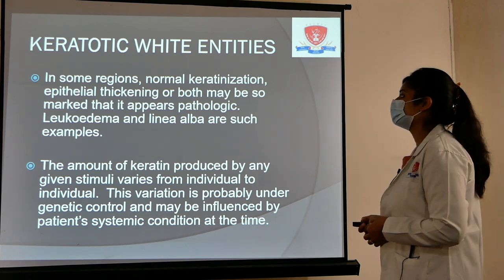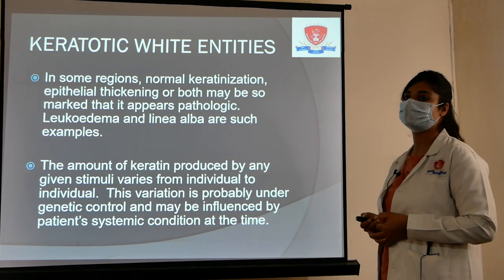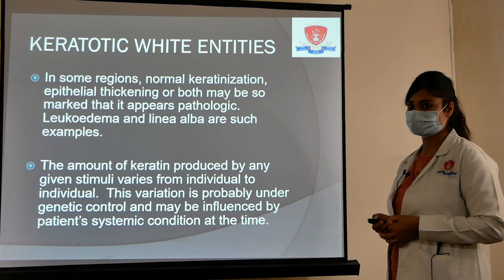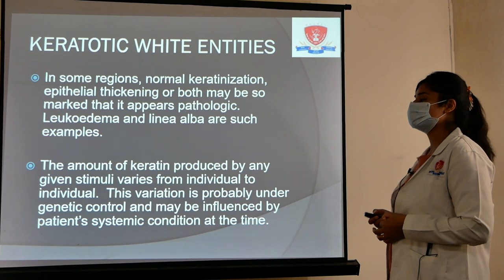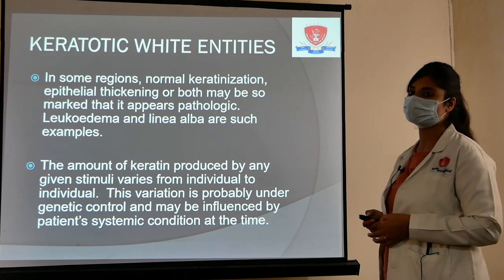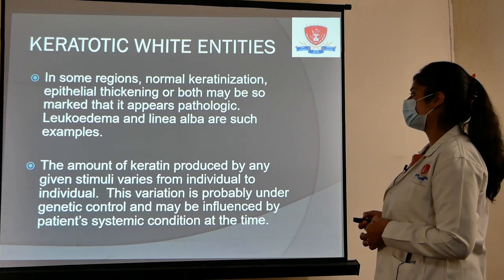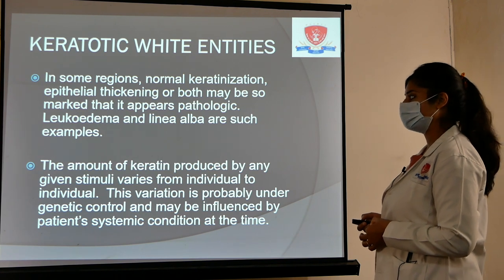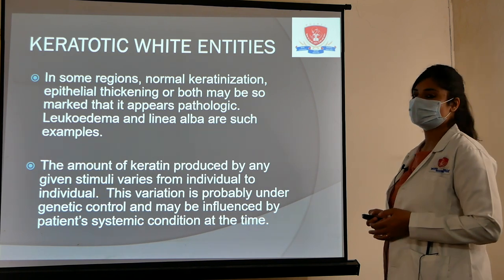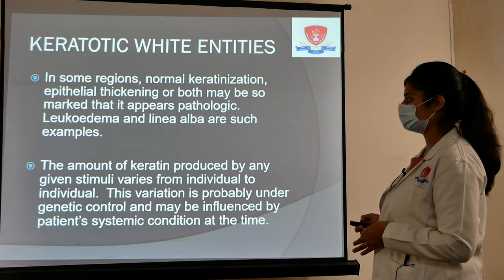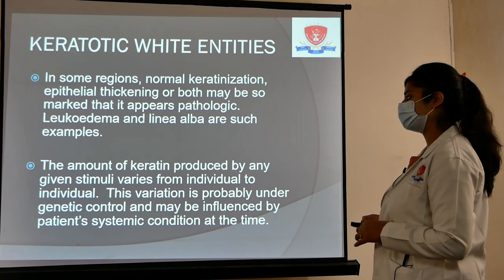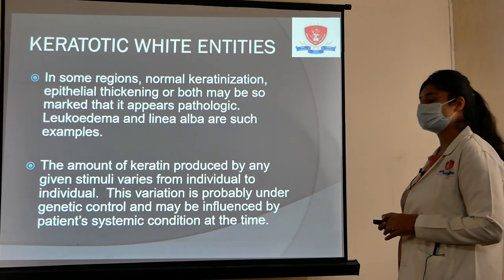Leukoedema and linea alba are examples of keratotic white entities where normal keratinization or epithelial thickening may appear pathologic. These are normal variants of the oral mucosa that appear as whitish lesions in the oral cavity. They occur due to hyperkeratosis, and the amount of keratin produced varies from individual to individual, explaining why they are not present in every person.